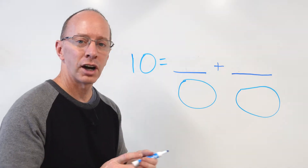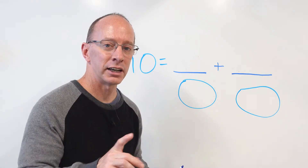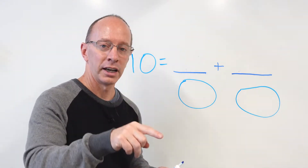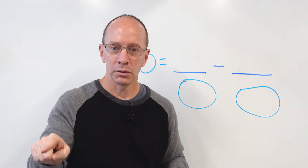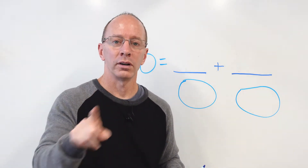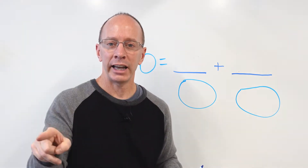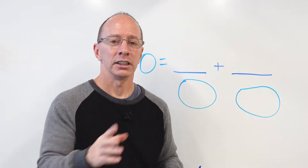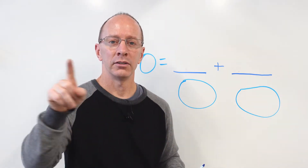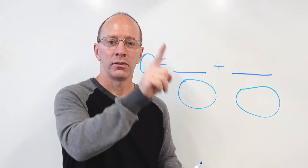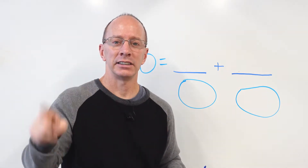So first of all, I want you to count to 10. When you're counting to 10, I want you to use your finger like this and go: 1, 2, 3, 4, 5, 6, 7, 8, 9, 10. Can we try that one more time? 1, 2, 3, 4, 5, 6, 7, 8, 9, 10.